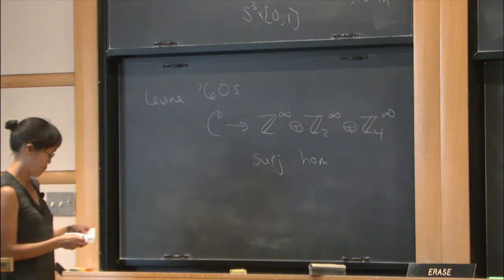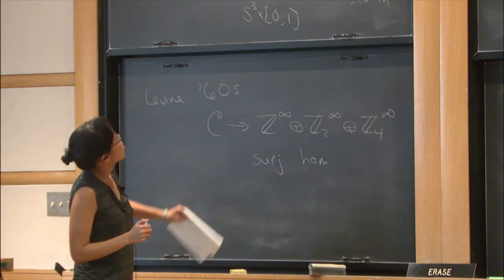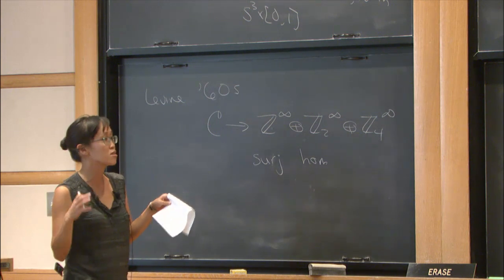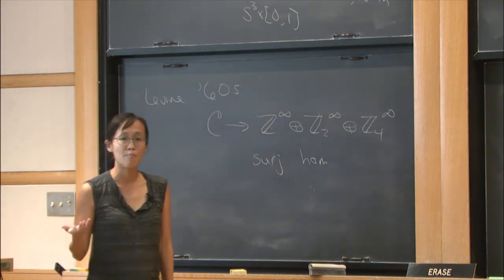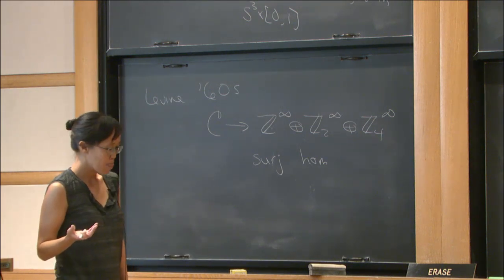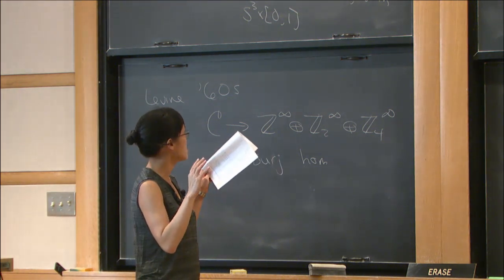Okay, so in our definition of the concordance group, we required our cylinder to be smooth. You might wonder, well, what happens if we relax that condition? You might relax it all the way to say, well, what if we just require this to be a topological embedding?